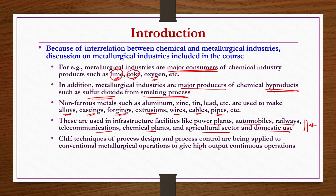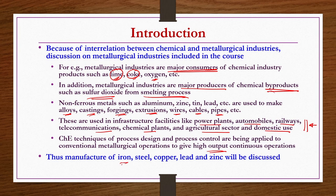Further, chemical engineering techniques of process design and process control are being applied to conventional metallurgical operations to give high output continuous operations. Because of such reasons, we are going to discuss the manufacture of iron, steel, copper, lead, and zinc in this particular week.